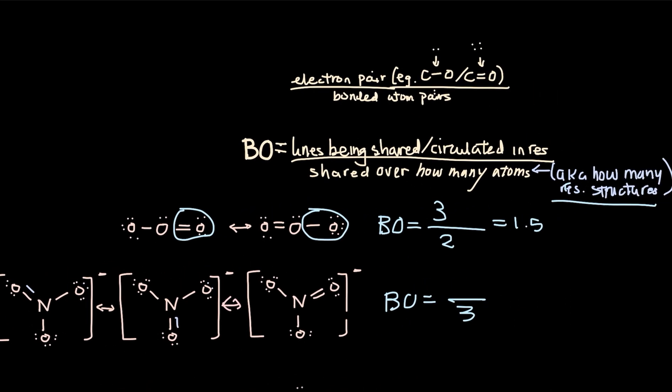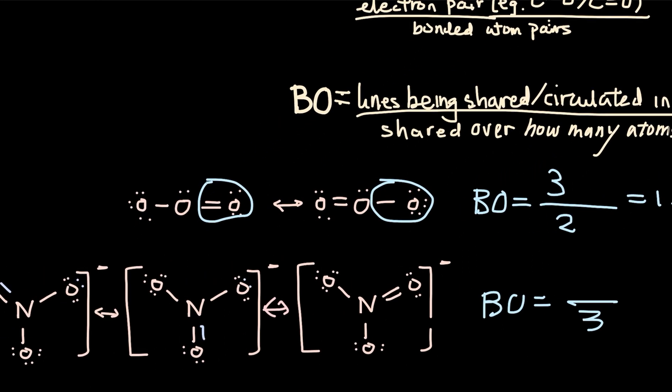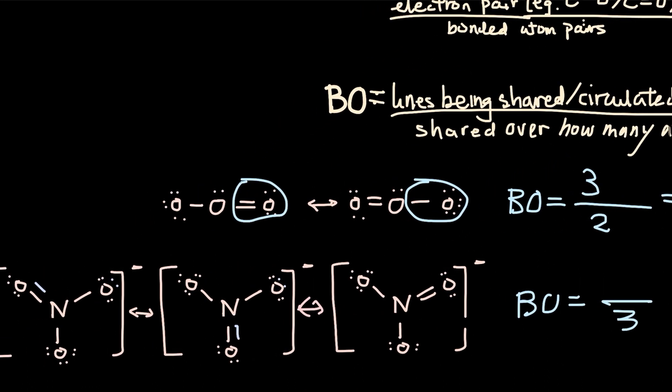And how many lines are being shared or circulated in the resonance structure? We'll take a look at one oxygen. So we'll look at this oxygen throughout all of the resonance structures. And how many electron pairs, or aka one bond, are shared?